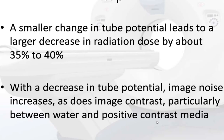A smaller change in tube potential leads to a larger decrease in radiation dose by about 35 to 40%. With a decrease in tube potential, image noise increases, as does image contrast, particularly between water and positive contrast media.